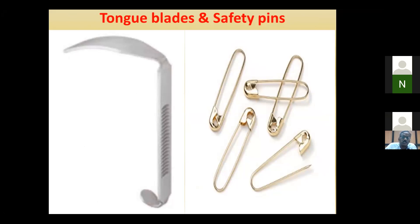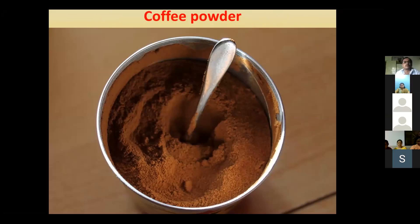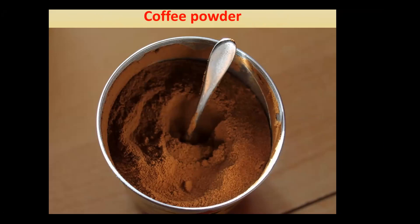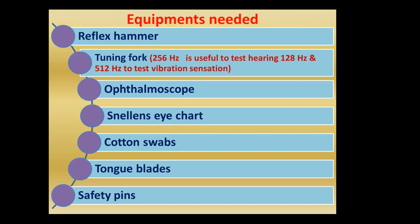Coffee powder is generally used for smell to identify the olfactory nerve. These are the general instruments used for CNS abnormalities: reflex hammer, tuning fork, ophthalmoscope, Snellen eye chart, cotton swabs, tongue blades, and safety pin. The tuning fork uses three frequencies: 256 Hz for hearing abnormality, and 128 and 512 Hz for vibration senses.